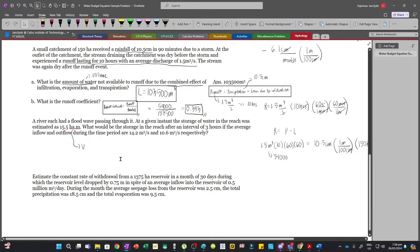Now what would be the storage in the reach after an interval of 3 hours if the average inflow and outflow during the time period are 14.2 and 10.6?